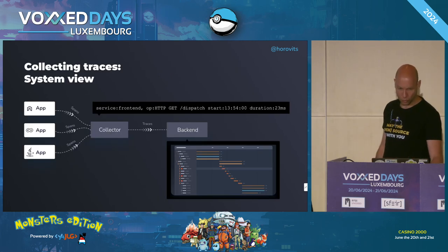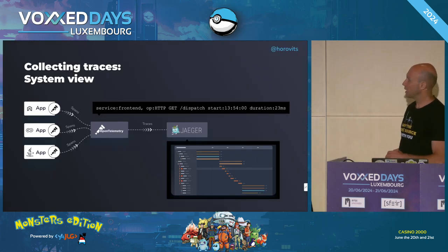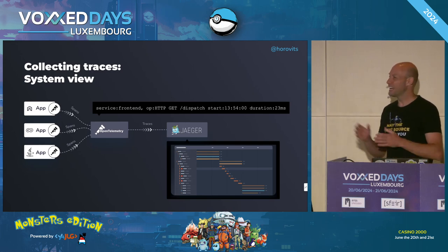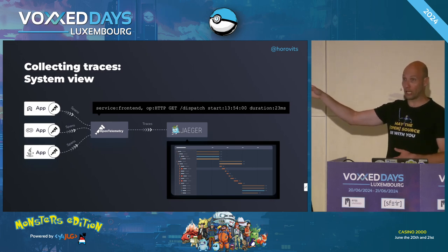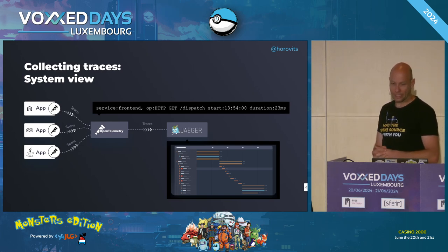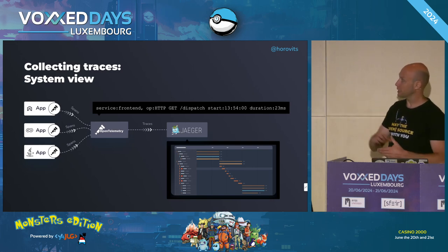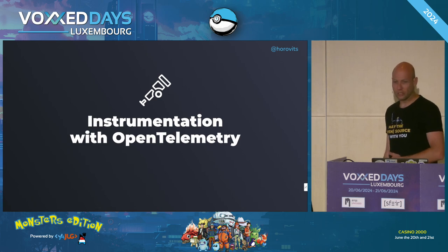The popular open source stack for this is: OpenTelemetry for application instrumentation and also for the collector, and Jaeger for the analysis backend. We'll focus today on the left-hand side — the instrumentation. So let's talk about application instrumentation with OpenTelemetry. How many know OpenTelemetry? And how many use it in production today? Two.